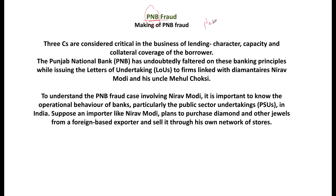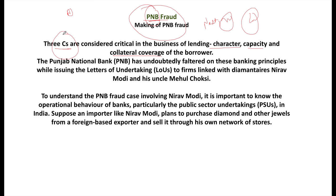Now let's talk in detail about the Punjab National Bank fraud. You will hear words like Nostro account, Vostro account, and LOU. This is an important topic for your interviews too. There are three C's that are important principles in the business of lending: Character, Capacity, and Collateral Coverage — these are the basic banking principles. Punjab National Bank faltered on these basic principles while issuing Letters of Undertaking to firms linked with diamond merchant Nirav Modi and his uncle Mehul Choksi.